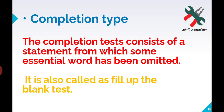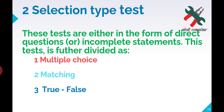Next is completion type test, also called fill-in-the-blank test. The completion test consists of statements from which some essential words have been omitted. You are given a statement with certain key words removed — left blank — and you must fill in those missing words. The major words that make a sentence meaningful are removed, and you must supply them in the test.